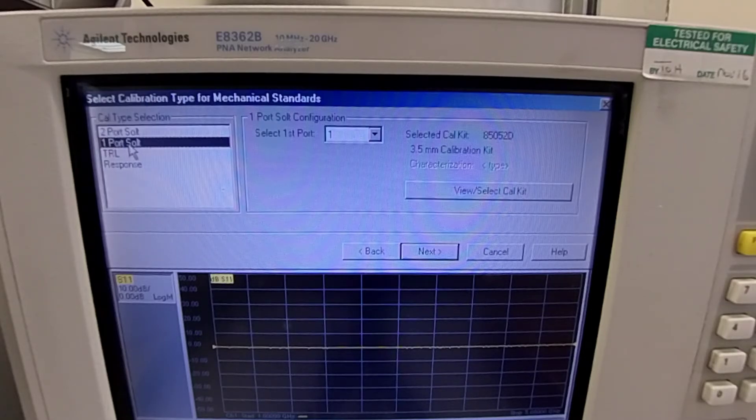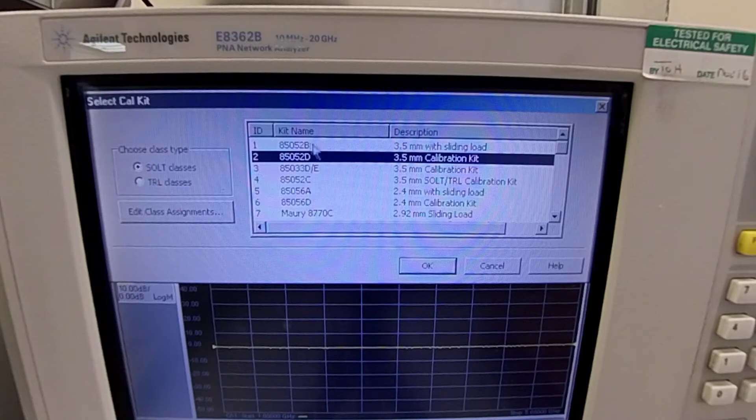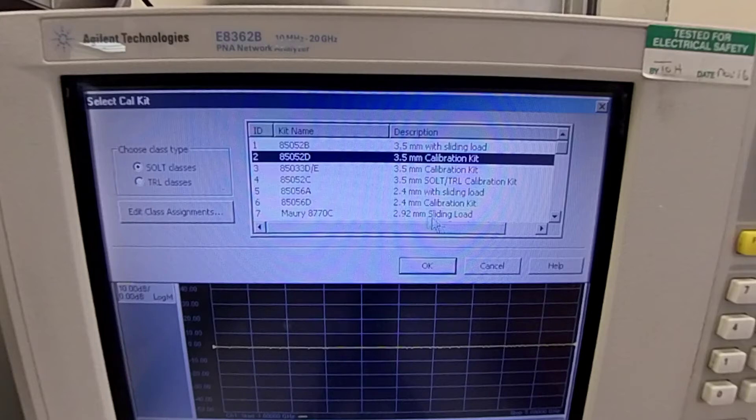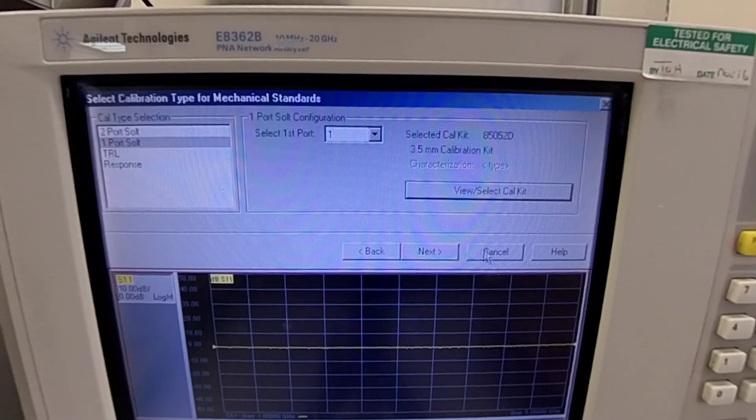We will select a one port SOLT calibration. SOLT stands for short, open, load, and through. The calibration kit by default is selected as 85052D which we are using right now. You can select other calibration kits from the menu if you have other than this calibration kit. We will start off with the calibration. Click next.